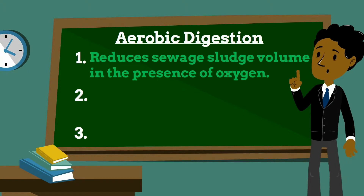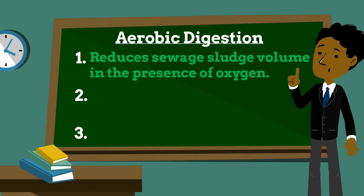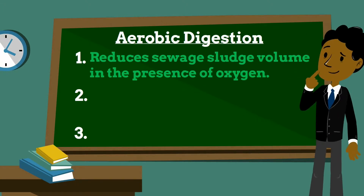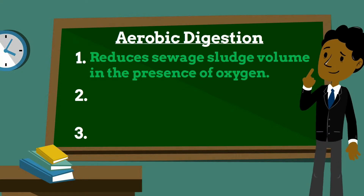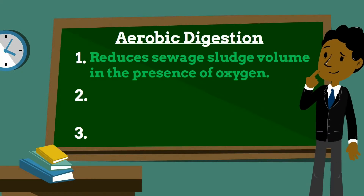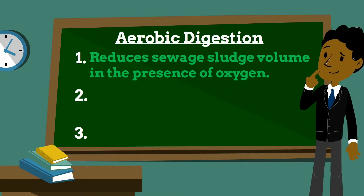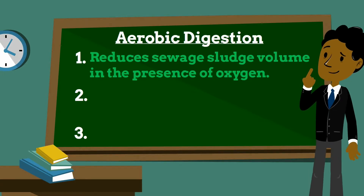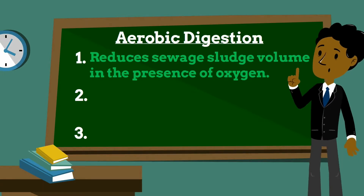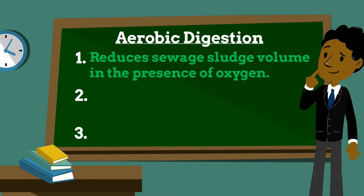Aerobic digestion is a process in sewage treatment designed to reduce the volume of sewage sludge and make it suitable for subsequent use. Recent technology has been developed that allows the treatment and reduction of various organic waste such as food and horticultural waste. It is a bacterial process occurring in the presence of oxygen.